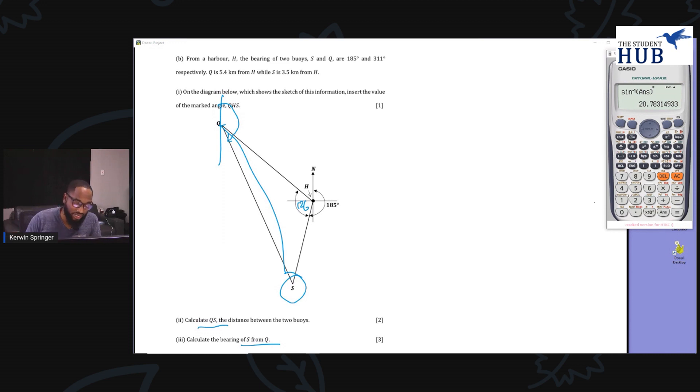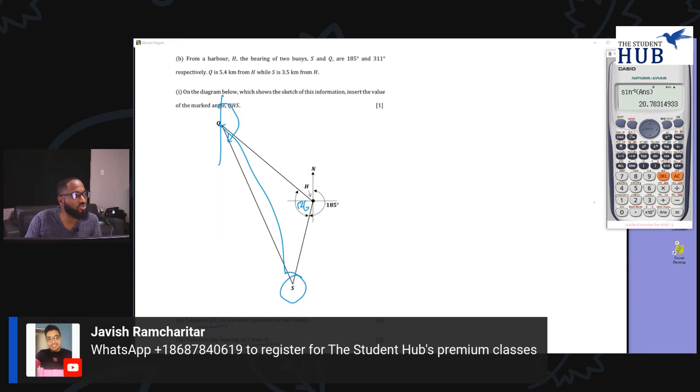Let me write the number on the screen. You can WhatsApp 784-0619 to register to the Student Hubs premium classes, or if you want to get your hands on the formula book that I showed earlier. The registration itself is closed, you can't just enter the class. Right now to enter the class, you actually need to pay for the whole course. It's a package deal.